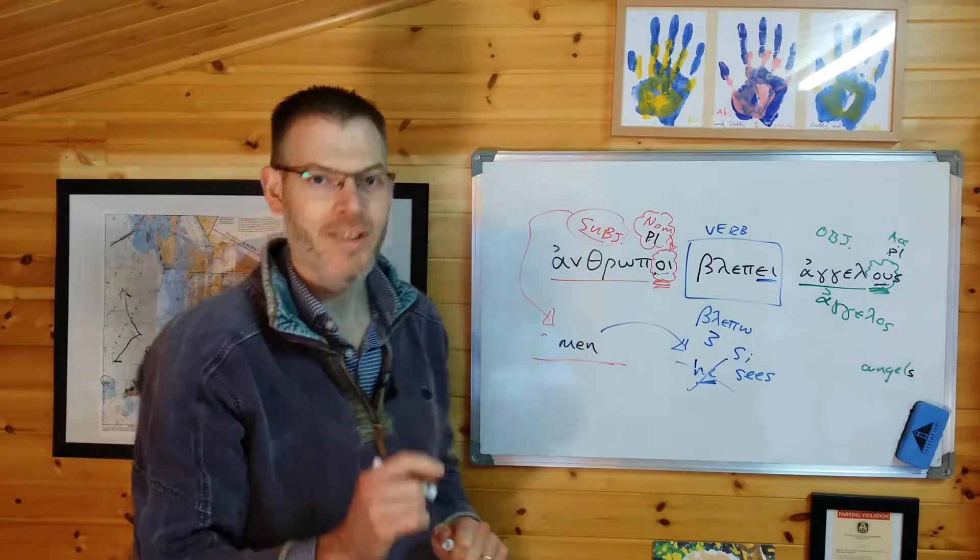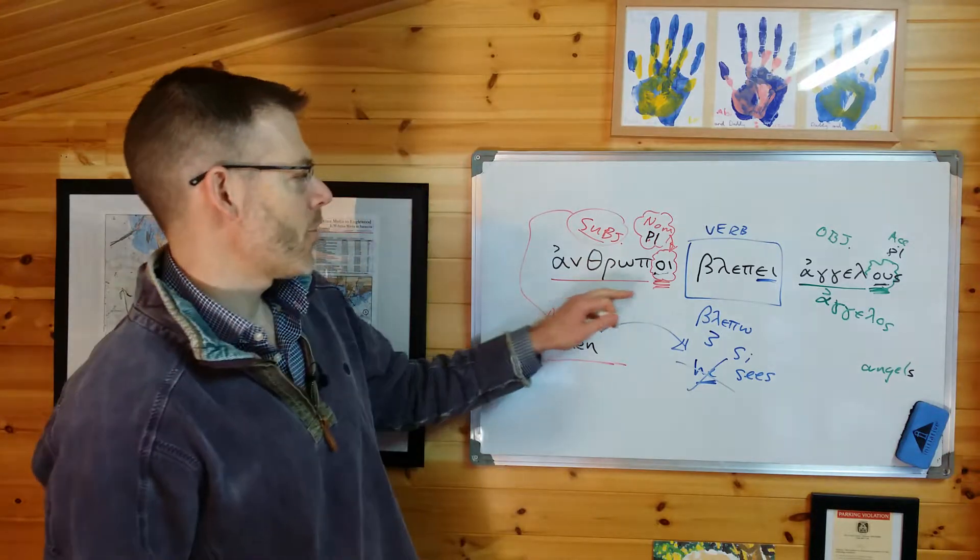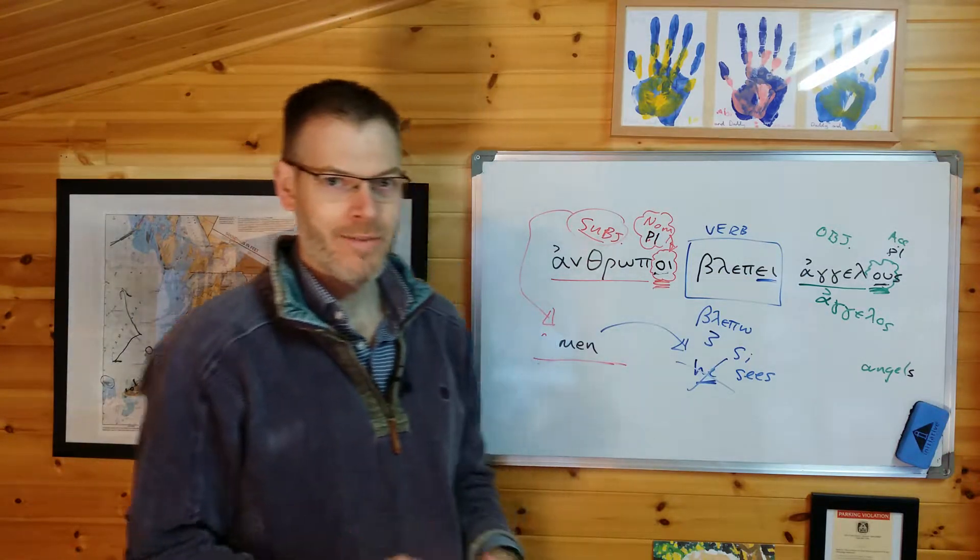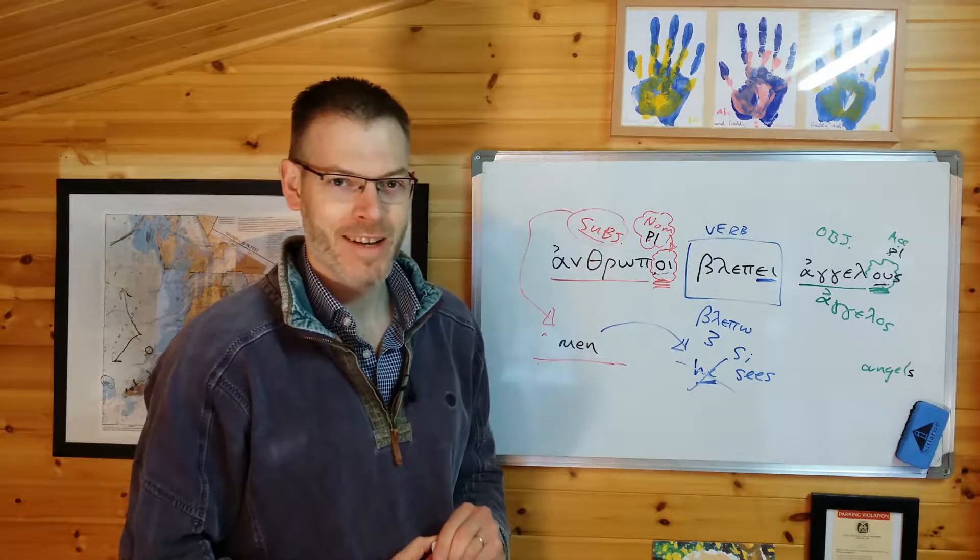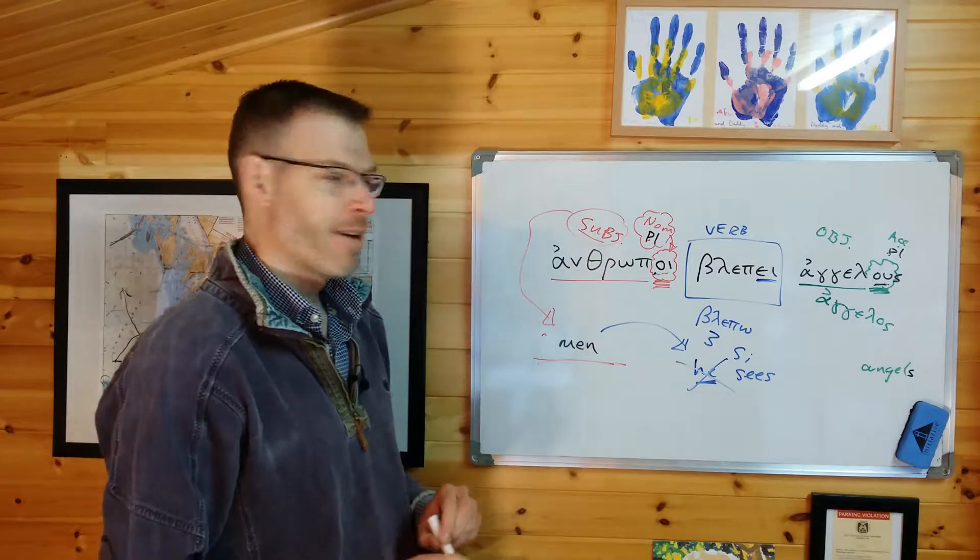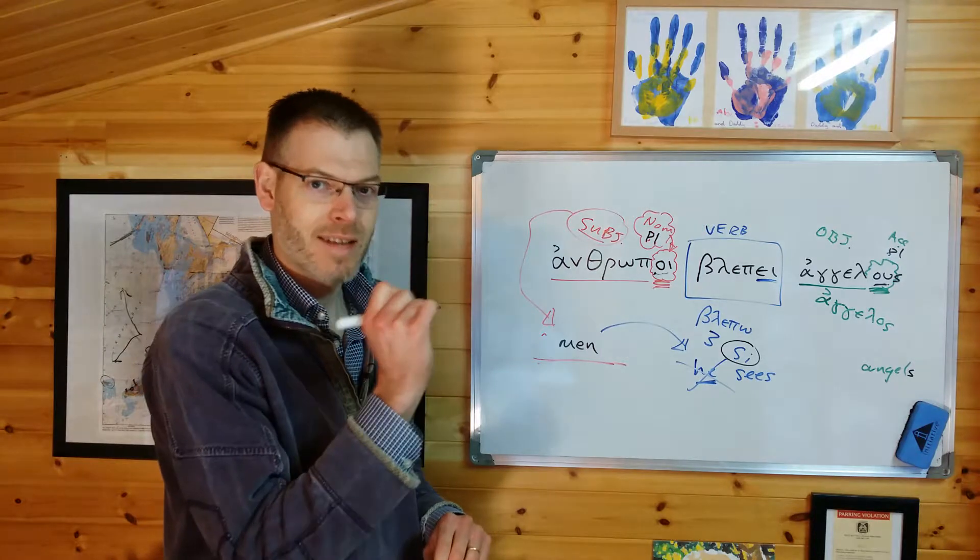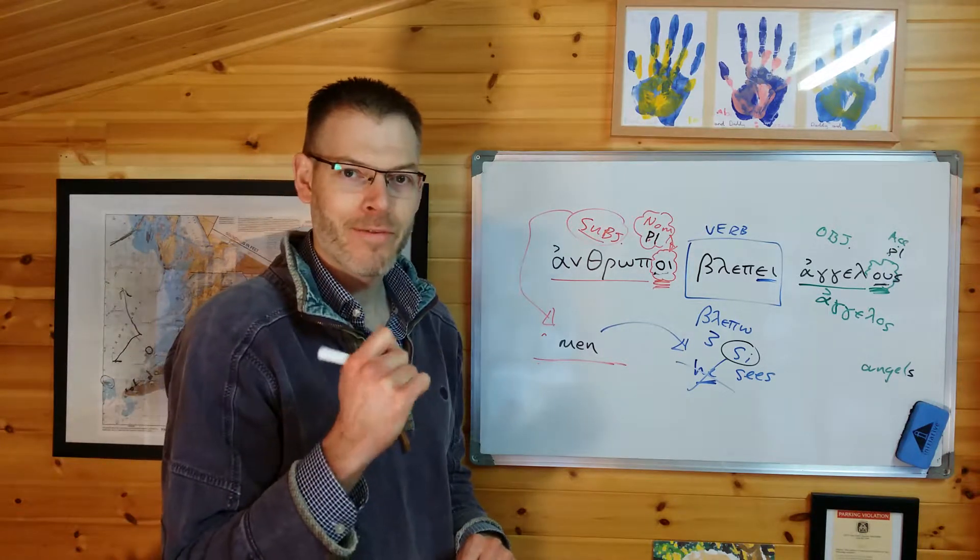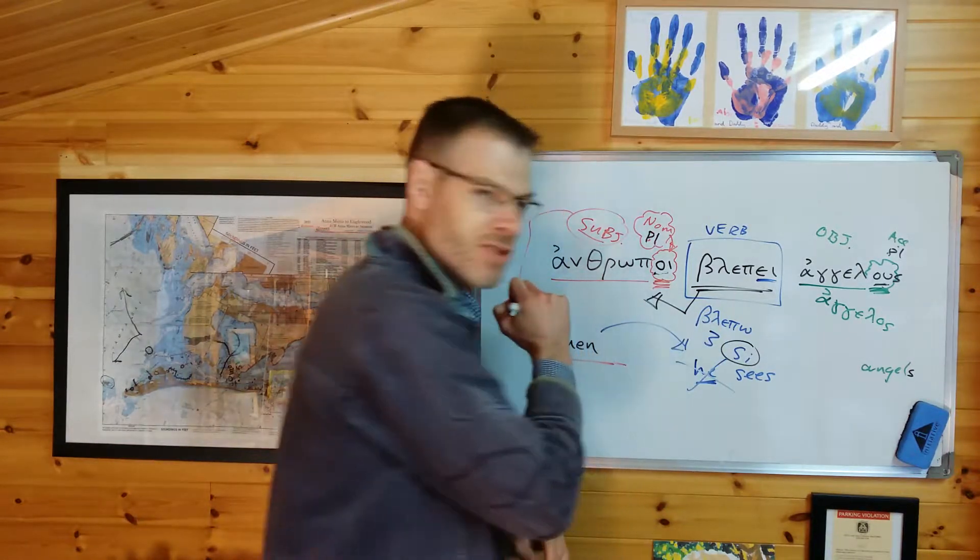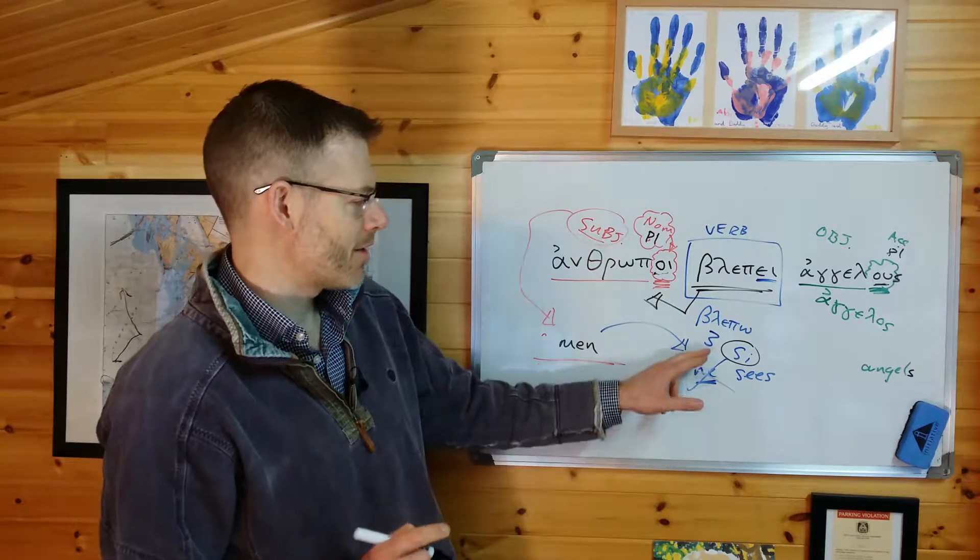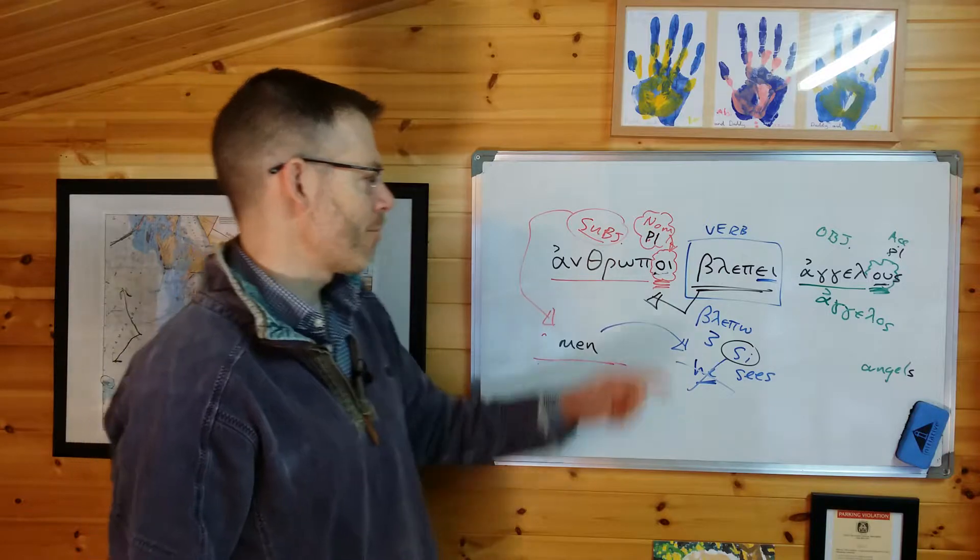But there's one other change that we need to make now. Can you guess what it is? Have a look at this sentence. Anthropoi, blepe, angelous. Take five seconds, have a look at this and see if you can work out what's wrong. Did you pause the video to have a look, see what's wrong? Of course, the problem here is the verb is still singular. And the number of the verb must be the same as the number of its subject.